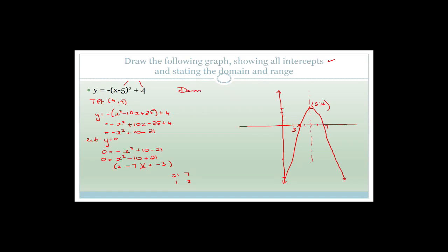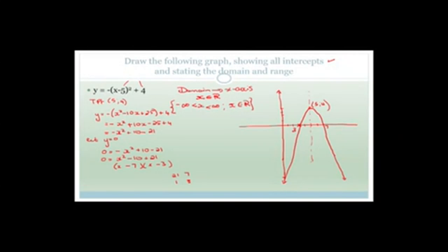Remember that domain is how far this graph stretches across the x-axis. This graph is going to carry on forever and ever, going left and right. So the domain is just x is an element of real numbers. You could also write that x is smaller than infinity and greater than negative infinity, for x is an element of real numbers. Either of these methods would be correct.